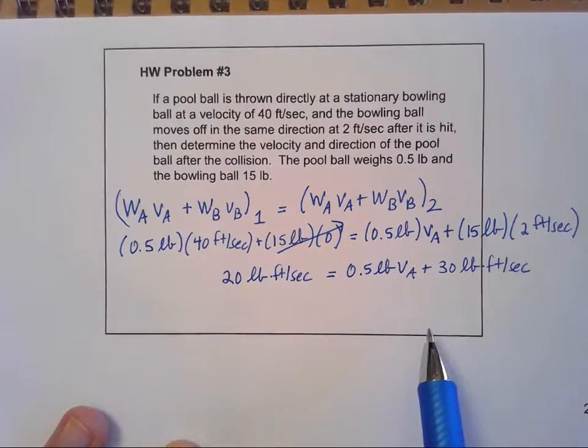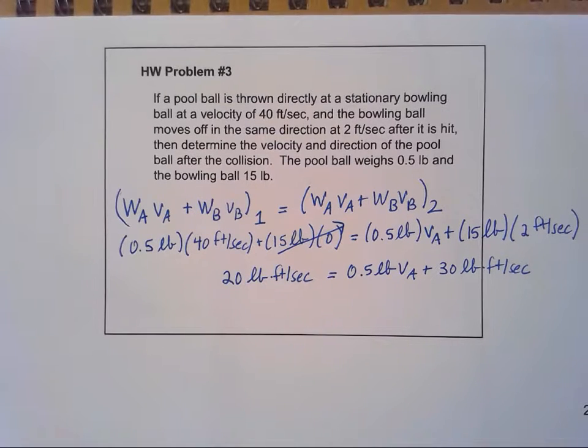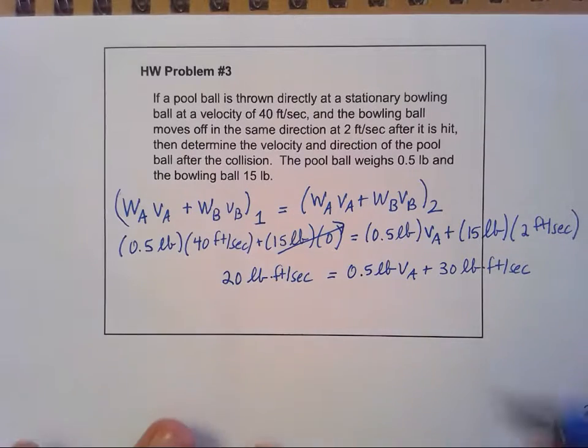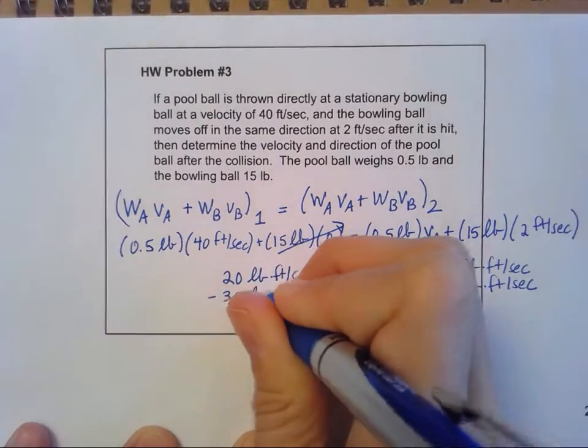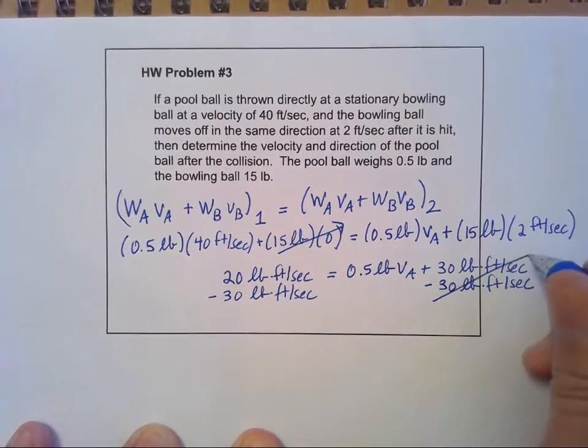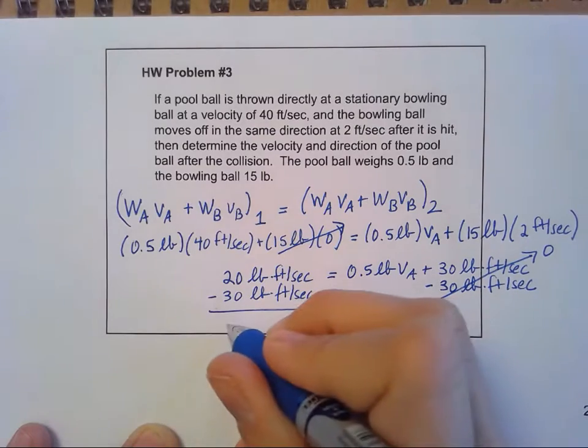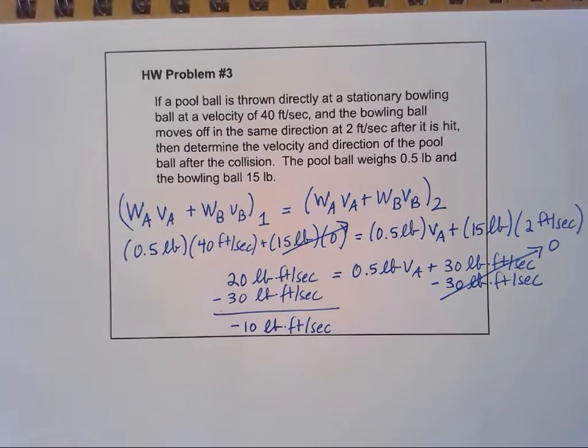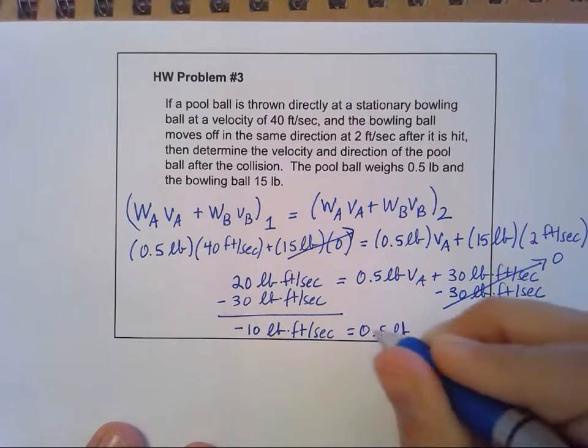Now I've simplified that pretty good. I've got two terms on either side that are constants with the same units. So I can combine those easily. I think what I'll do is I'll leave my variable here and subtract the 30 from both sides. So that's going to make this term go away on this side. Here, I have a 20 minus a 30, so that's going to give me a negative 10 pound foot seconds. My units don't cancel there because I'm subtracting, not dividing. And that's equal to the 0.5 pound VA.